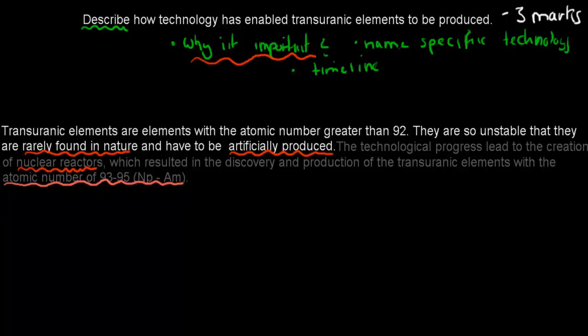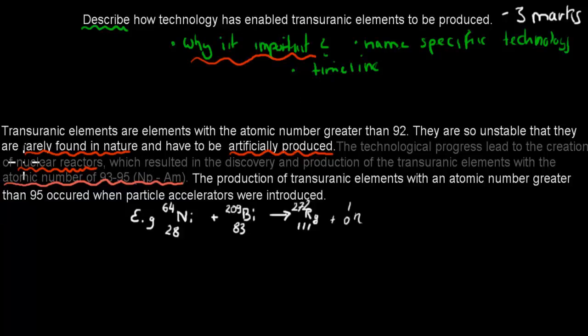And then we still have to mention the next technology. So the production of transuranic elements with the atomic number greater than 95 occurred when particle accelerators were introduced. So that's our technology here.